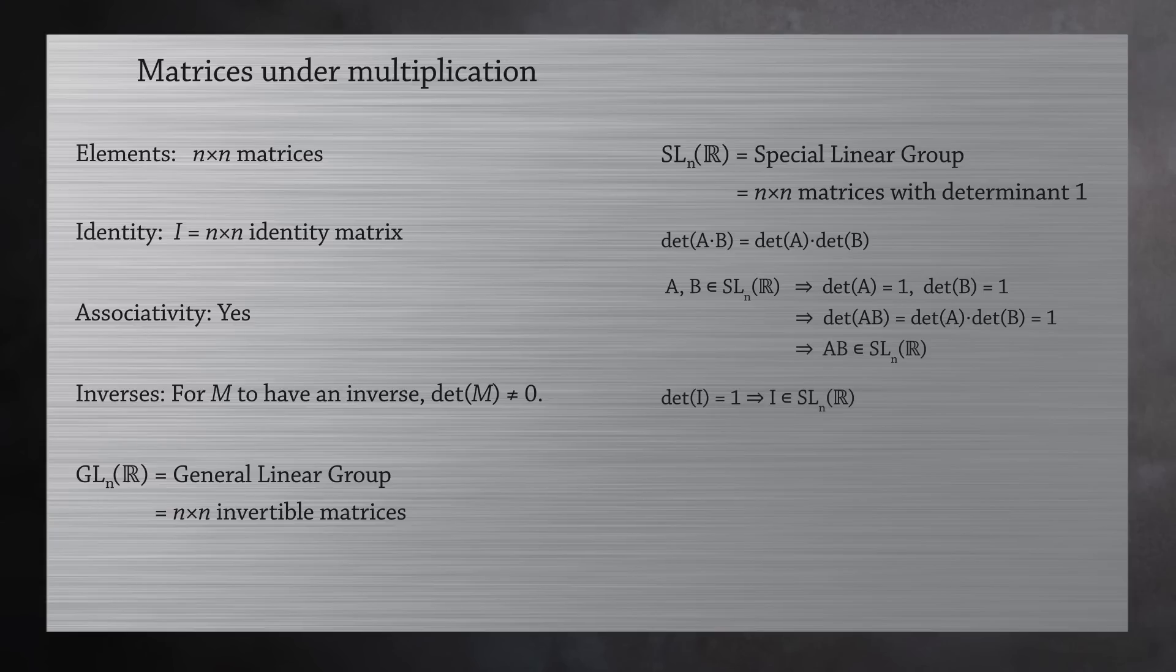The identity matrix has determinant 1, so it's in the group. We still have associativity, which just leaves inverses.